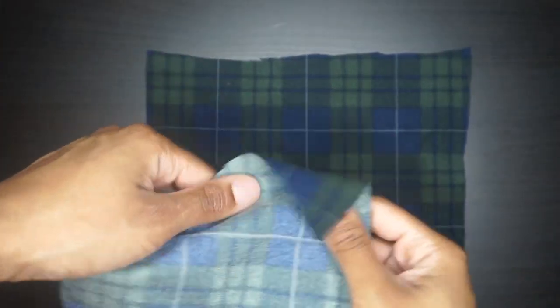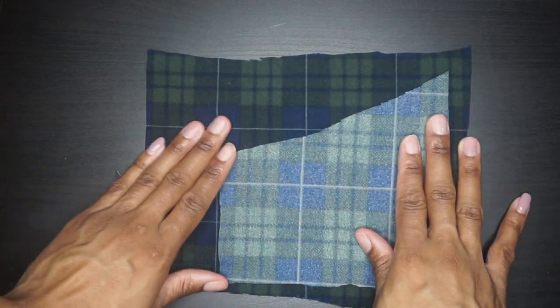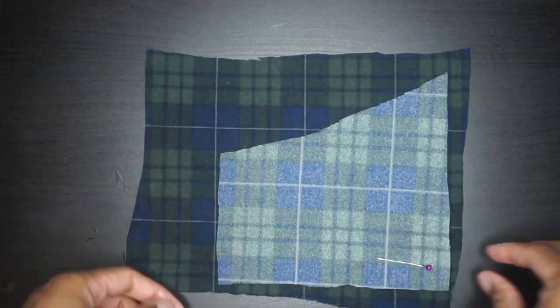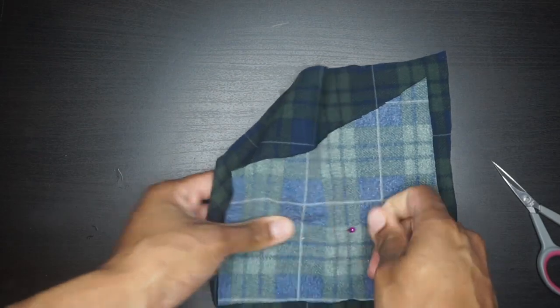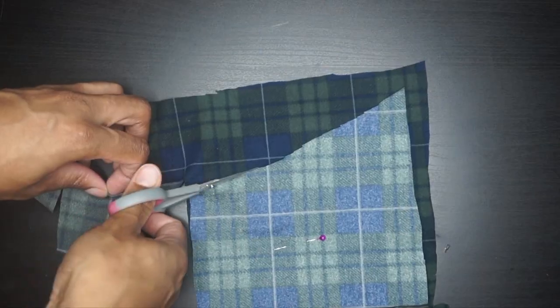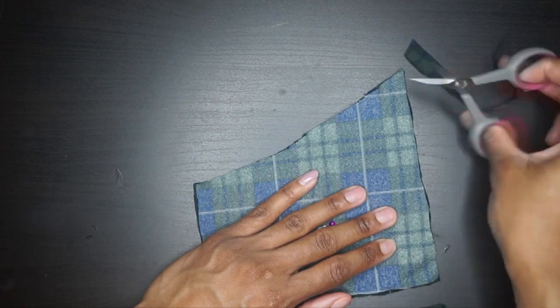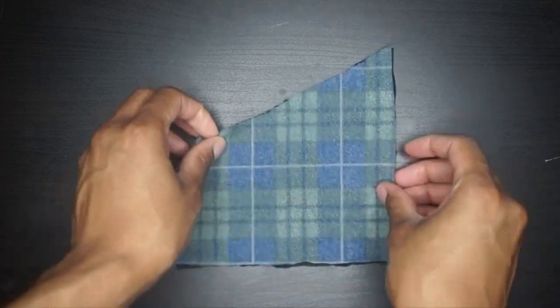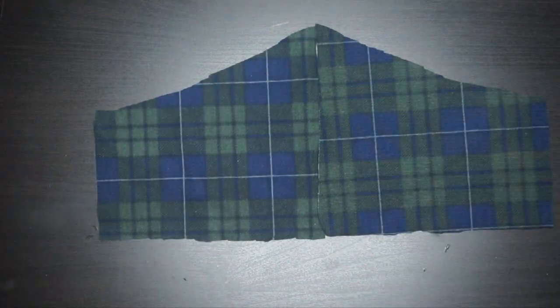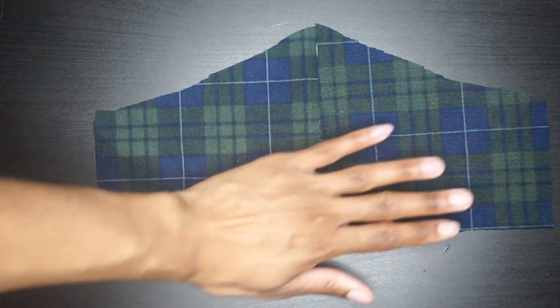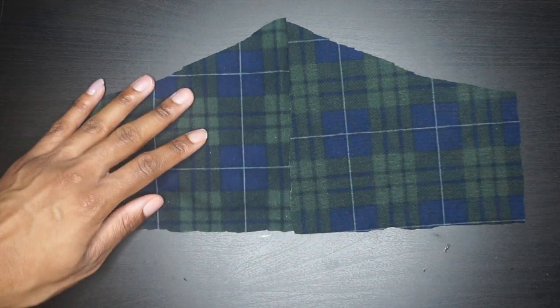Once you're finished cutting out your first piece, for the second piece make sure you flip it over to the other side or you're going to have two of the exact same pieces and have to cut out a third piece. There it is, the front half of your mask.